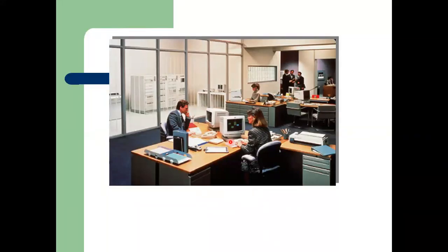For the generations assignment, write down the major findings of each generation, the tenure of that generation — from which year to which year — and the main equipment or inventions of that particular generation. Then for the next generation, write its tenure and new findings. Make your assignment covering all existing generations from the first generation up to whatever the current generation number is.